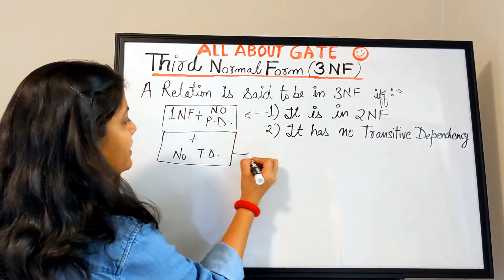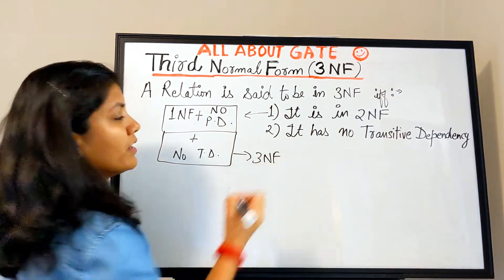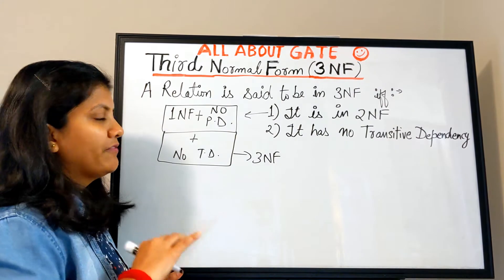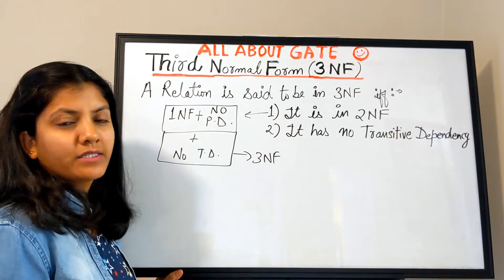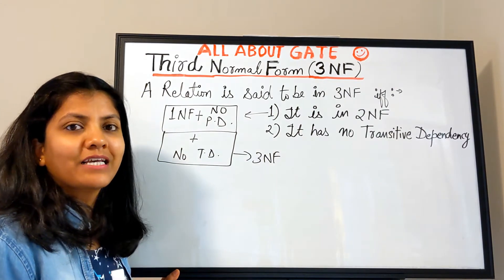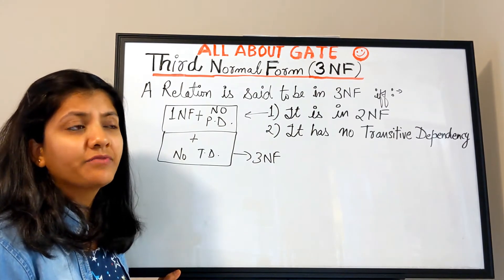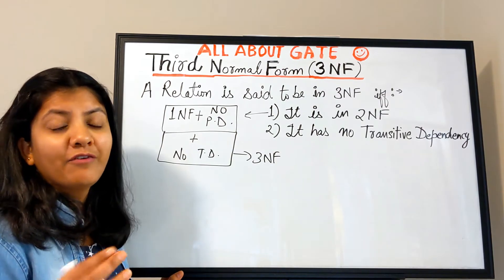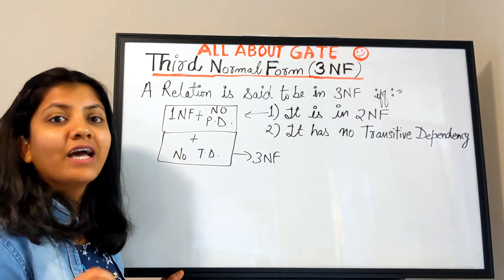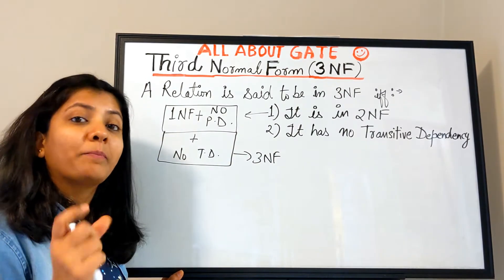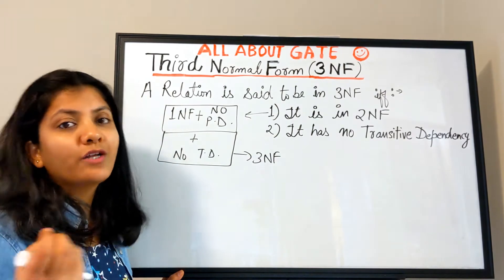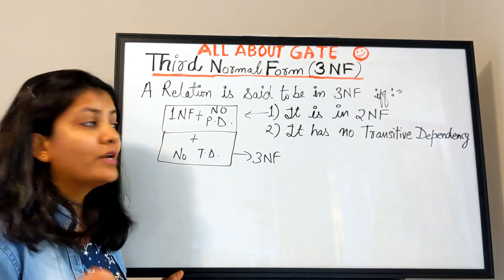These two conditions together form the definition of third normal form. Now the question arises: what is transitive dependency? We have seen normal functional dependencies where we care about a set of attributes determining another set. In partial dependency, the determinant was part of a candidate key and the dependent was a non-key attribute. Now let's try to understand transitive dependency.